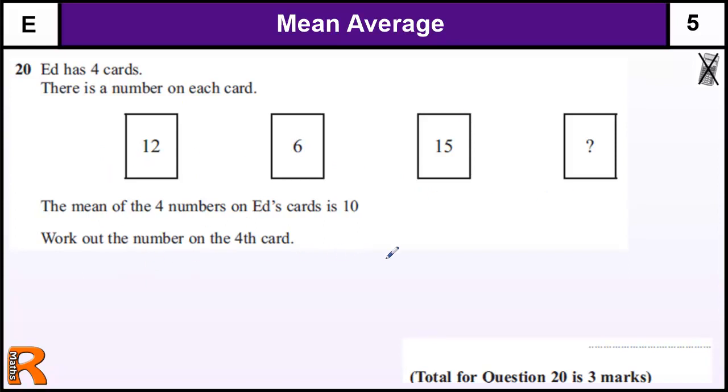As long as you know that the mean is where you add, so you get the total, and divide by the number of things, in this case 4, and that gives you the mean, which is, we're told, the mean of the four numbers is 10.